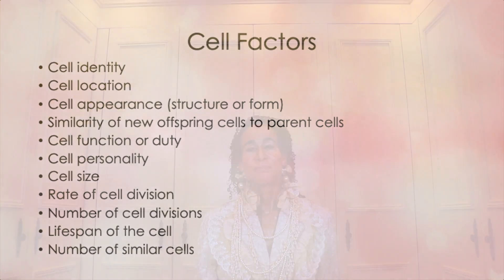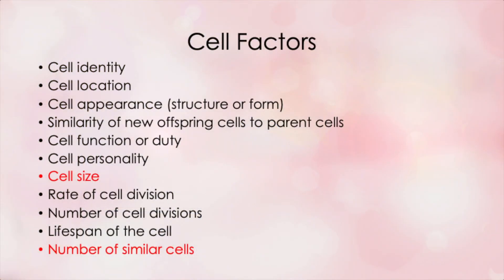Last week, in video number 309, I presented the factors involved in the life of a normal cell. You'll recall this list. Looking at this list of factors for a normal cell, notice that some of the factors refer to either cell size or cell number. Here's the list with those items highlighted in red. These are the two things we'll discuss today: cell size and cell number.